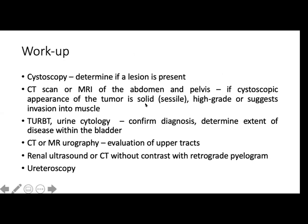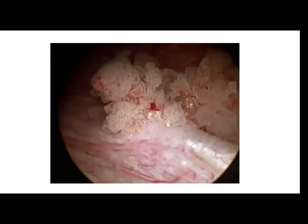With urine cytology, you can do a CT or MRI urography, renal ultrasound, and CT with contrast. And of course, ureteroscopy for those with advanced stages. This is an example of a cystoscopic finding of a bladder mass.